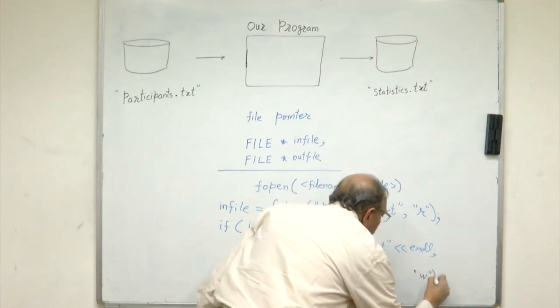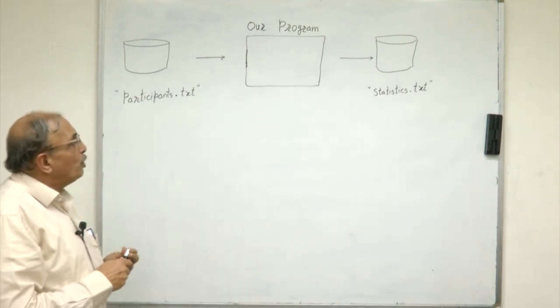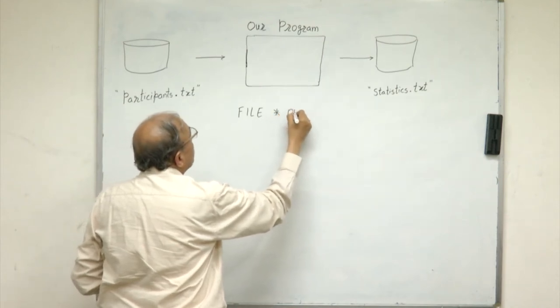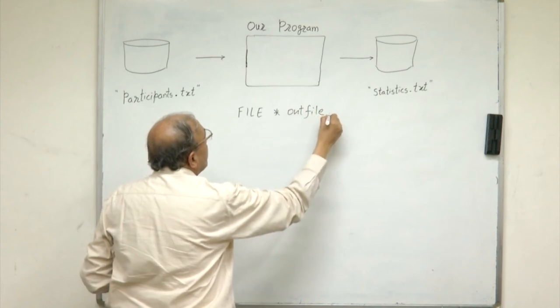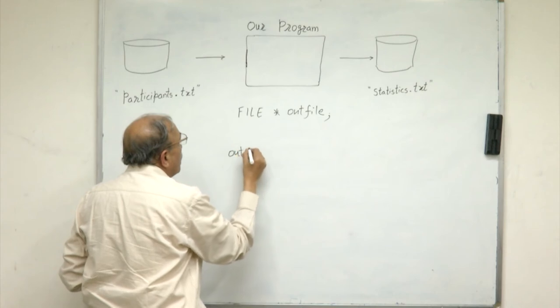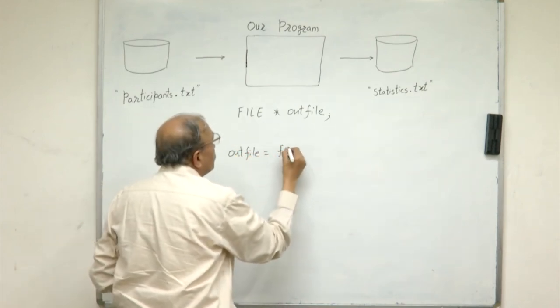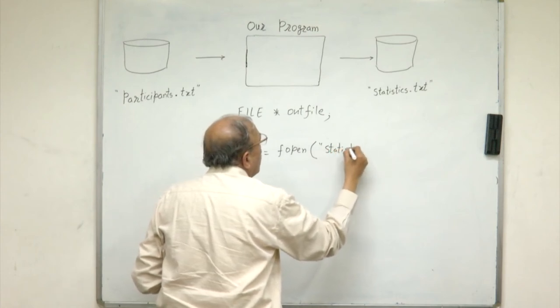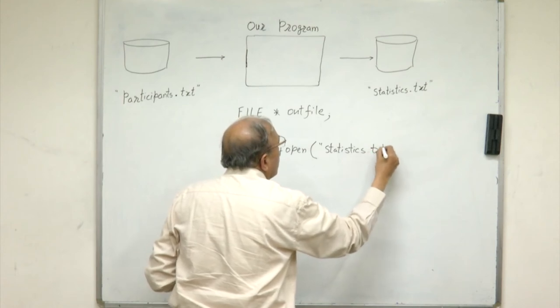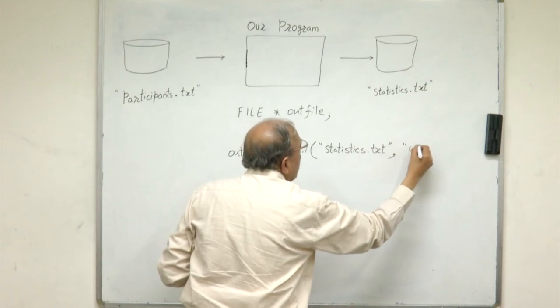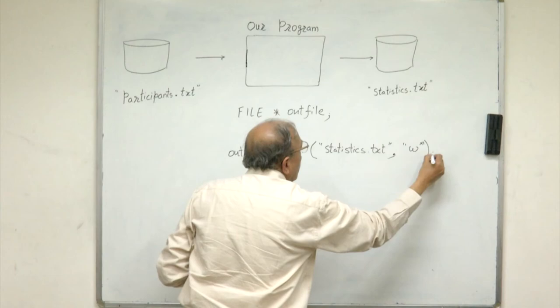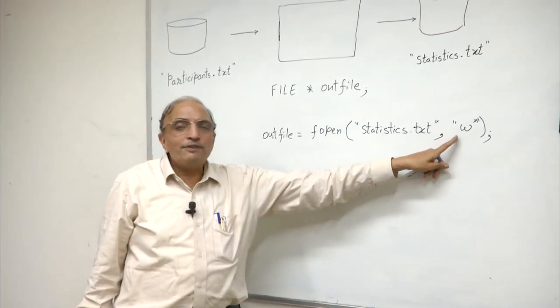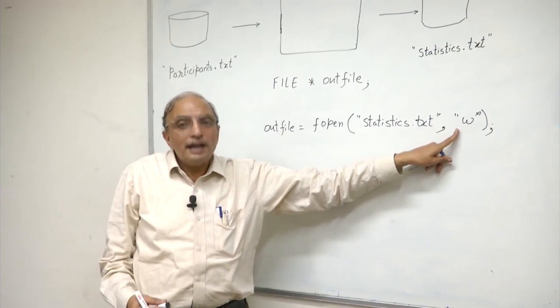So for example, let me show you how an output file could be opened. You will recall we have declared a file such as FILE * outfile. In our program, if we say outfile equals fopen, you see it is exactly the same way that you opened a file for input. The only difference is that in the mode you specify the letter 'w' to indicate that you want to write the data into this file, that means it is an output file.